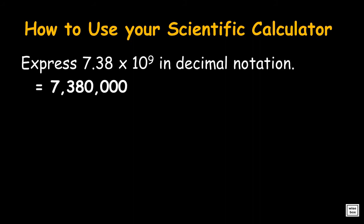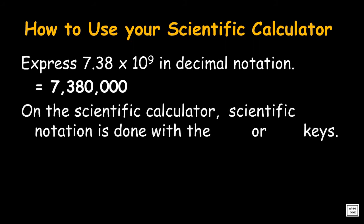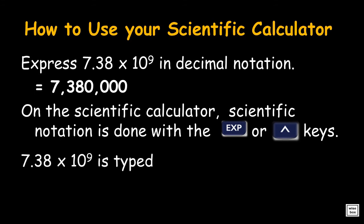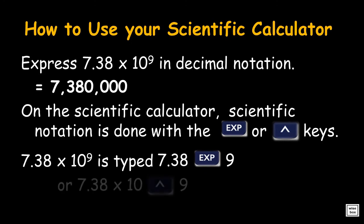On the scientific calculator, scientific notation is entered with either the EXP key or the caret key. Both the EXP key and the caret key raise the number to an exponent or power. Thus, the number 7.38 times 10 to the power 9 is typed as: 7.38, then the EXP key, then 9. Or, 7.38 times 10, then the caret key, then 9.